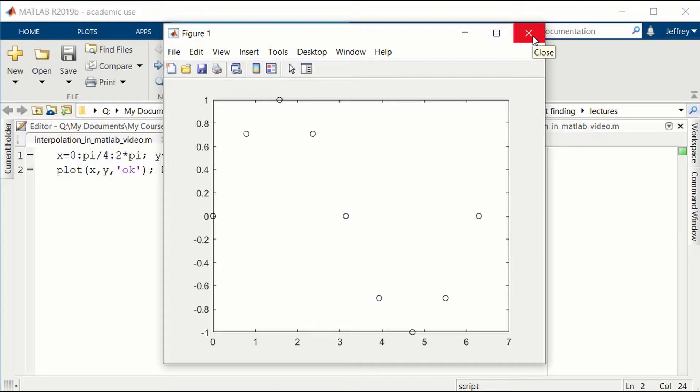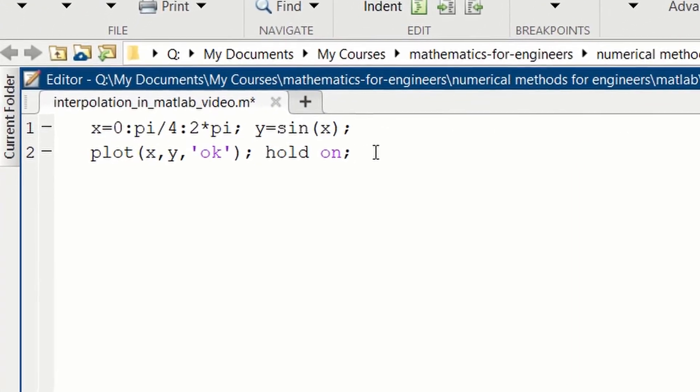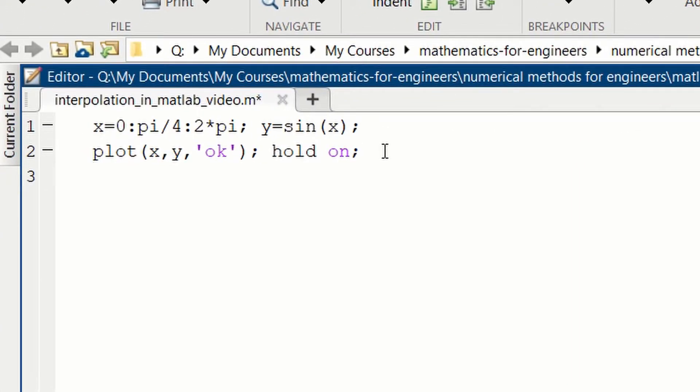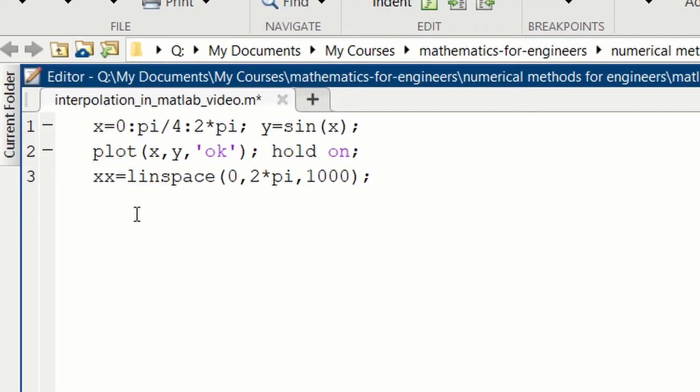Let's close the figure and do interpolation to a much finer grid in x. I will set xx, the points that we're interpolating to, to a linear grid, linspace, from 0 to 2pi with a thousand points, instead of these sparse points that are separated by a distance of pi over 4.